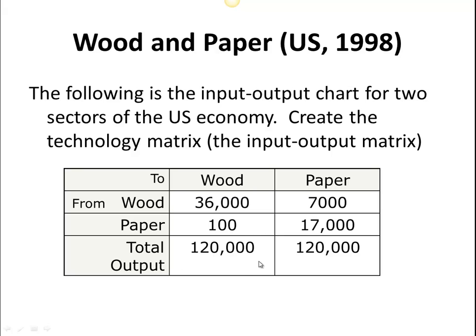What we've got to do is convert this table — which is in terms of 120,000 units of output — into a table of only one unit of output. That's the key. We want to make a matrix that represents how much wood we use up to produce one unit of wood, and how much paper we use to produce one unit of wood. Similarly, how much wood is used up to produce one unit of paper. We've got to convert the 120,000-unit basis into a single unit. What's the rate per unit?